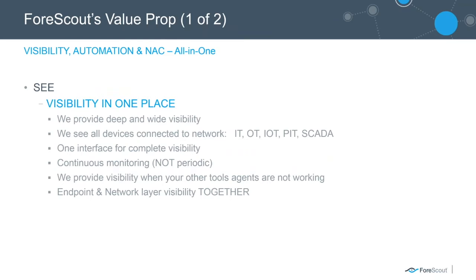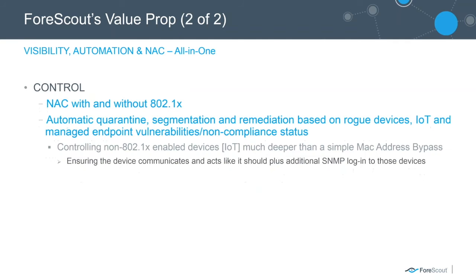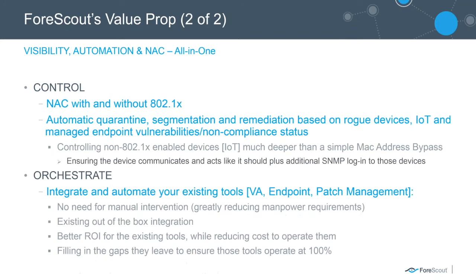The three foundations are See, Control, and Orchestrate — giving visibility in one place, both deep and wide, including visibility into IoT, OT, PIT, and SCADA networks. We provide continuous monitoring of everything versus periodic. With Control, it's NAC — network access control with or without 802.1X. We can still do control without 802.1X. It provides automatic quarantine segmentation and even remediation for all devices, both managed and IoT.